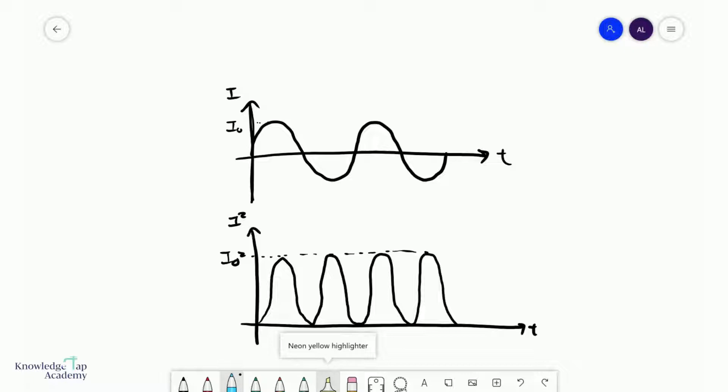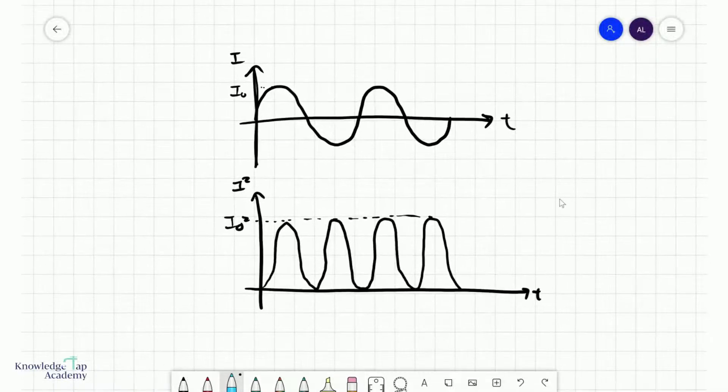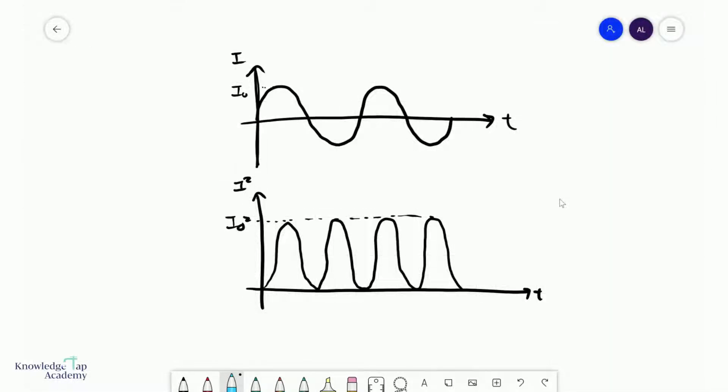And so, remember, when we want to calculate this RMS value, you have to do the step: square everything first, take the mean, and then you calculate the root of that.